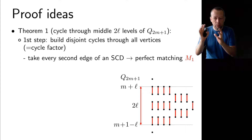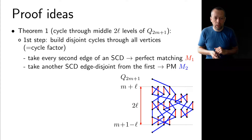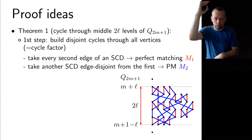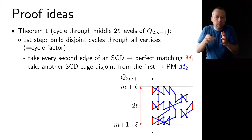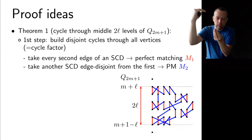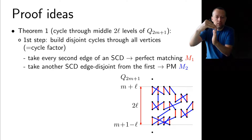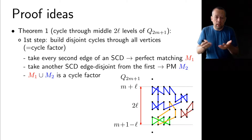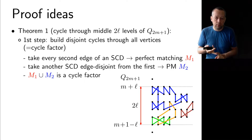Now every vertex in the middle levels is incident to one red edge and one blue edge. The union of the two matchings M1 and M2 gives a cycle factor. This completes the first step — we have a collection of cycles. In this example we see four cycles: a blue cycle, a yellow cycle, a green cycle, and a brown cycle. There is still work to do since we want a single Hamilton cycle, not four separate ones.